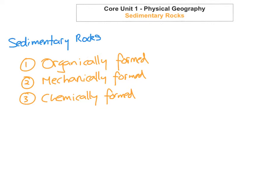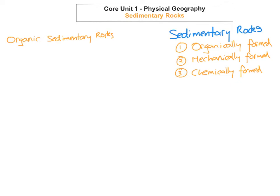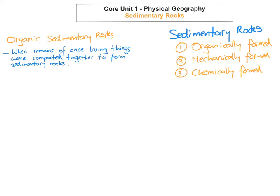Let's start with organically formed sedimentary rocks. Organic sedimentary rocks are basically the remains of once-living organisms — such as sea creatures and plants — that were compacted together to form sedimentary rocks, compacted because of the overlying weight of the sediments above them. Examples of organic sedimentary rocks include limestone and coal.